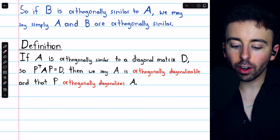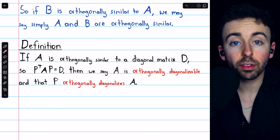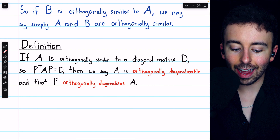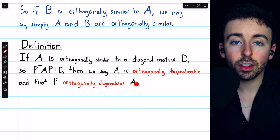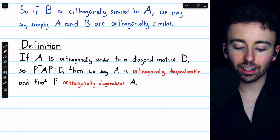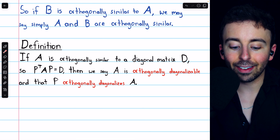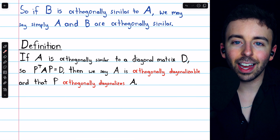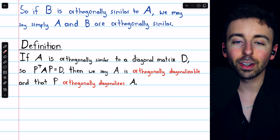If A is orthogonally similar to a diagonal matrix D so that P transpose AP equals D for some orthogonal matrix P, then we say that A is orthogonally diagonalizable, and that orthogonal matrix P is said to orthogonally diagonalize A. This is just like previous discussions of diagonalizability, except instead of A just being similar to a diagonal matrix D, for it to be orthogonally diagonalizable it has to be orthogonally similar to the diagonal matrix. Orthogonally diagonalizing a matrix is even more work than ordinary diagonalization.